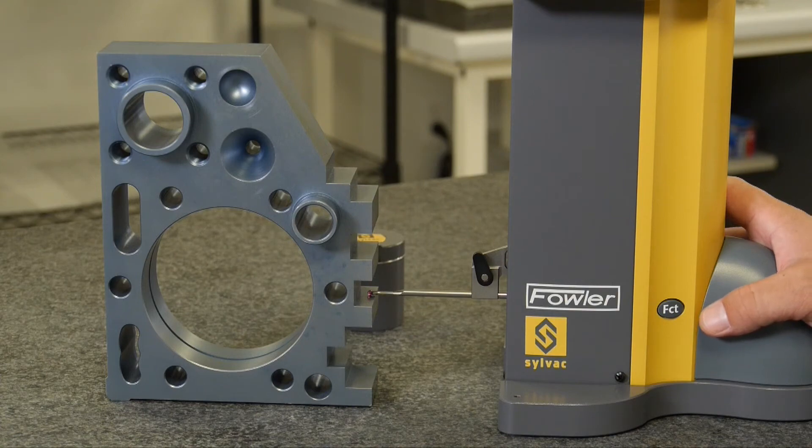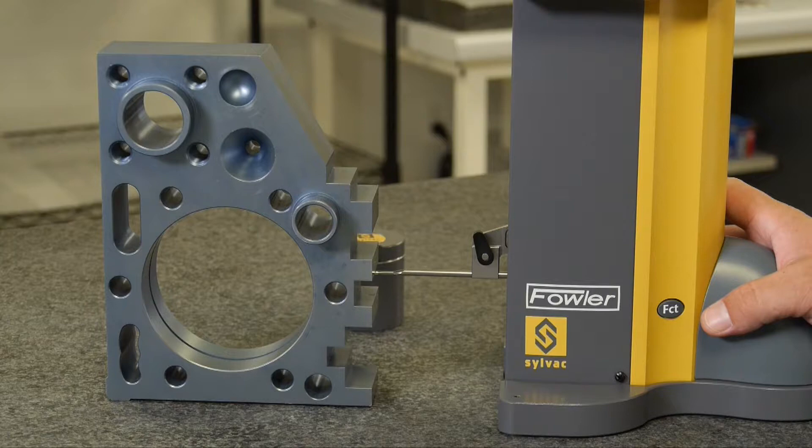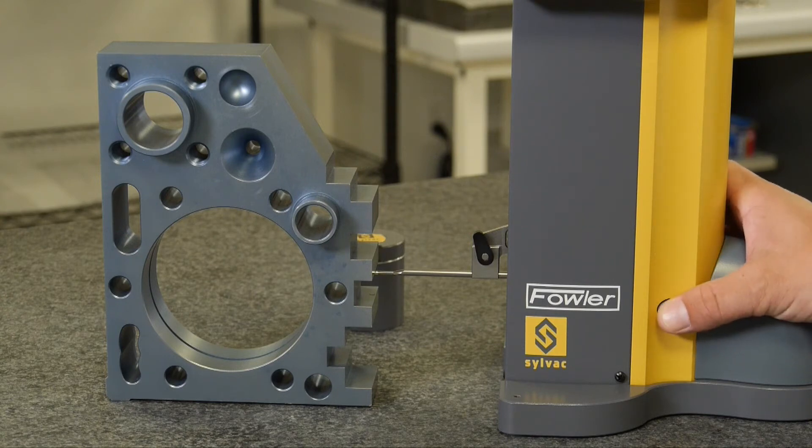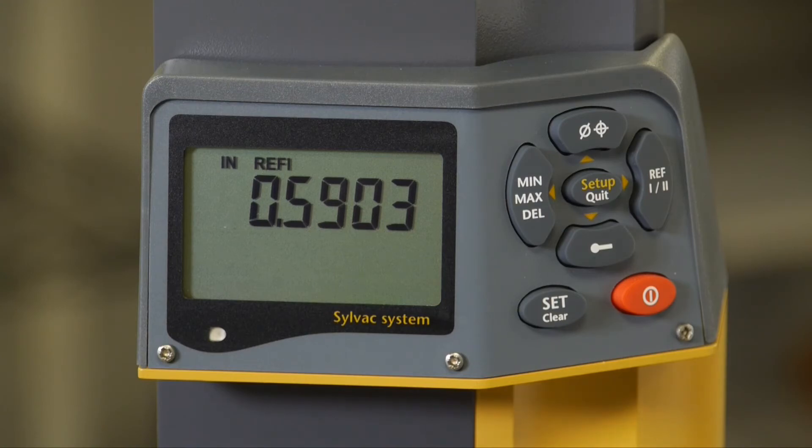Again, if I drive up, 2.95 is the distance from the surface that my probe is in contact with to my surface plate, my reference position. If I hit that difference button, that function button, it will give me the difference. 590 thousandths is my slot width.